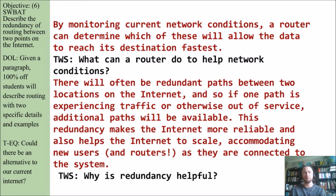There will often be redundant paths between two locations on the internet, so if one path is experiencing traffic or is otherwise out of service, additional paths will be available. This redundancy makes the internet more reliable and also helps the internet to scale, accommodating new users and routers as they are connected to the system. So based on that, why is redundancy helpful? Why have several paths to the same location?